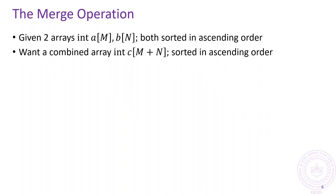Let us now see how to perform the merge operation. Suppose we are given two arrays, a and b with m and n elements respectively, both sorted in increasing order. We want to create a new array c with m plus n elements that combines the elements present in both the arrays a and b such that c is also sorted in ascending order.